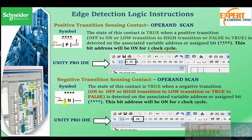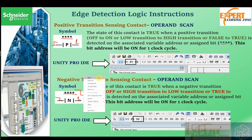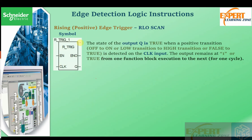For this contact, when we have a transition from the high to the low stage, logic flows from the left side to the right side. The state of this contact is true when a negative transition — on to off, high to low, or true to false — is detected on the associated variable address or assigned bit. When the assigned bit experiences a logic one to logic zero transition, there is a logic one on the right side.